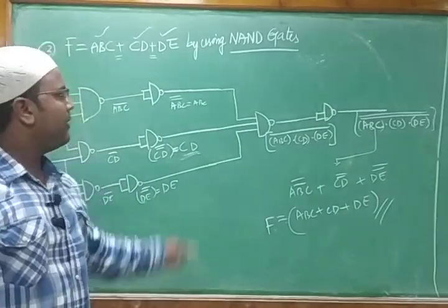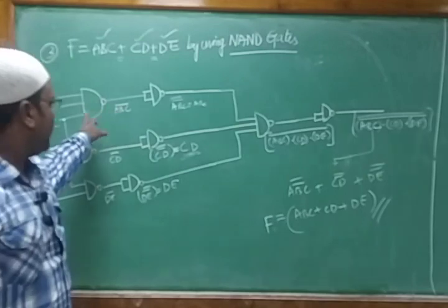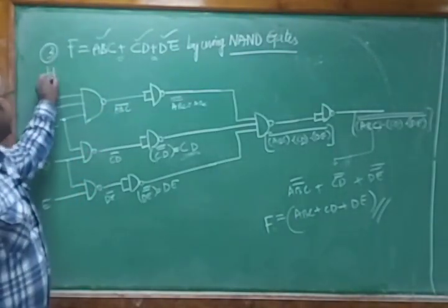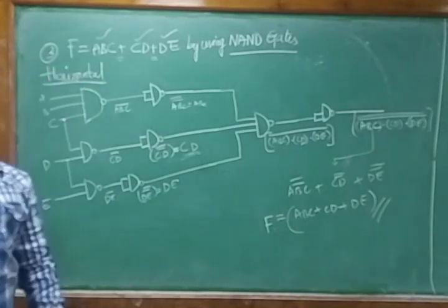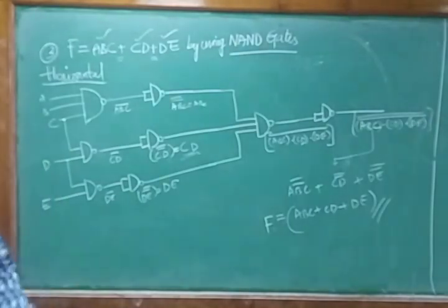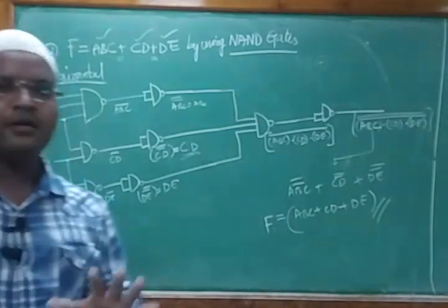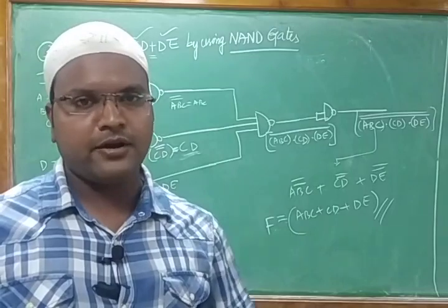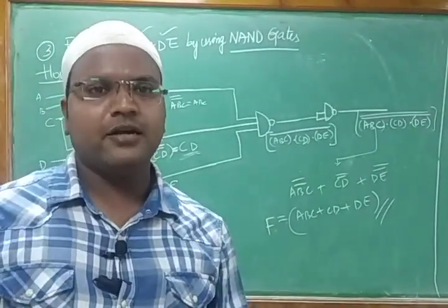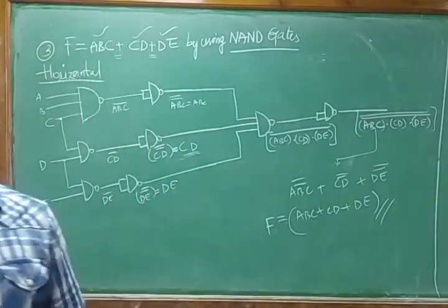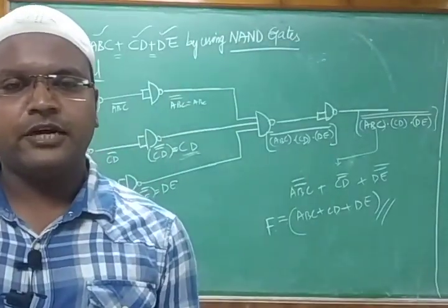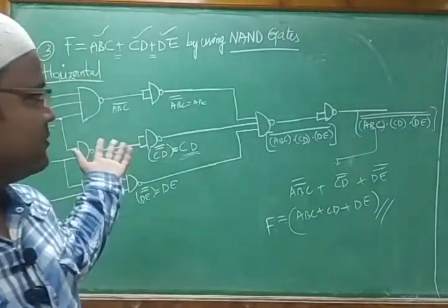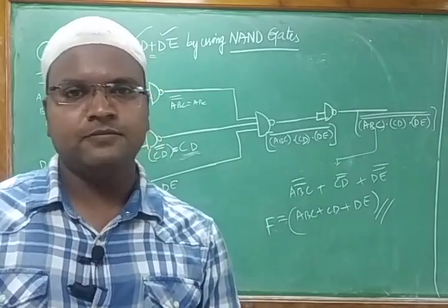Finally, pass that result through one more NAND gate to get the double complement. By De Morgan's law, this yields (ABC)̅̅ + (CD)̅̅ + (DE)̅̅ = ABC + CD + DE, which is F. So using only NAND gates in a horizontal design approach, we have realized the complete function. Practice these gate-level design problems, and in the next class we will cover NOR gate equivalents. Thank you and have a good day.